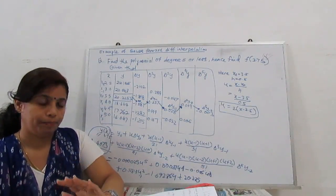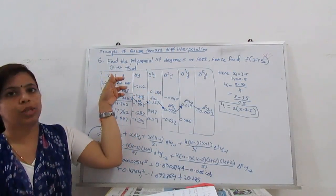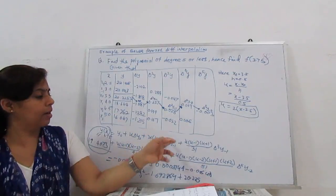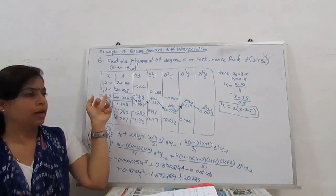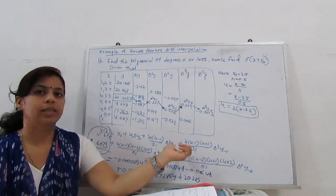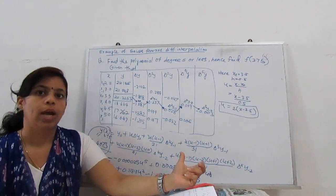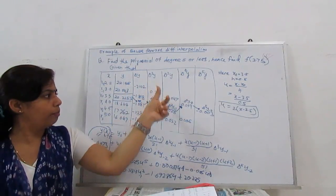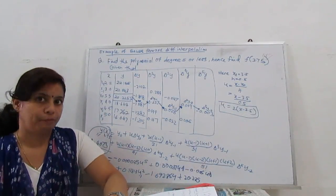In Newton's forward formula the table is the same, but we calculate from x₀, x₁, x₂, x₃, giving y₀, y₁, y₂, y₃ and so on. In Gauss forward interpolation, we calculate from the center, so x₀ is the center point. The values used are y₀, Δy₀, Δ²y₋₁, Δ³y₋₁, Δ⁴y₋₂, Δ⁵y₋₂ — going down, up, down from the center of the table. This is the Gauss forward formula.